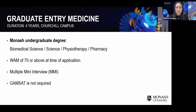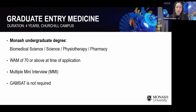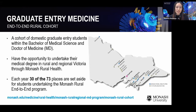Briefly, the Graduate Entry Medicine Pathway is a four-year degree. We only take students from within Monash — from biomedical science, science, physiotherapy, or pharmacy. If shortlisted you'll be called for an interview. Note that the GAMSAT is not required for our post-grad option, but you could do it as a backup if applying to other Australian universities. Within the Graduate Entry Program there is also an end-to-end rural cohort, where most students do their placements regionally within Victoria.